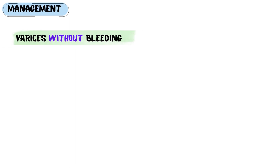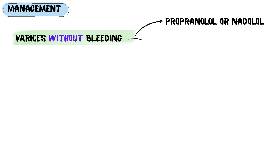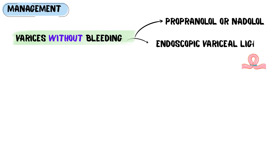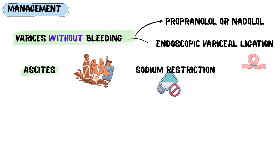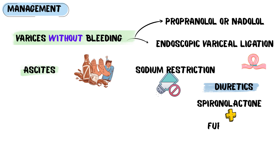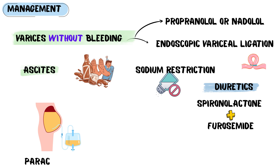The goal is to treat complications and reduce portal pressure. For varices without bleeding, use non-selective beta blockers such as propranolol or nadolol, or perform endoscopic variceal ligation. For ascites, stop alcohol, restrict sodium, and use diuretics. Start with spironolactone and add furosemide after correcting hypokalemia. Perform large-volume paracentesis for tense ascites with albumin replacement.